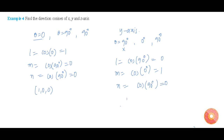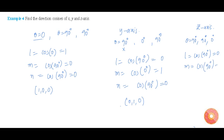Therefore, the directional coefficients of y-axis are 0, 1, 0. Now let us find the directional coefficients of z-axis. The angle made by z-axis with x-axis is 90 degrees, and with y-axis is 90 degrees, and with itself is 0 degrees. Therefore, L is equal to cos of 90, which is 0. And M is equal to cos of 90, which is 0.